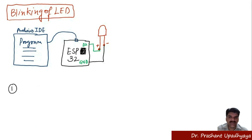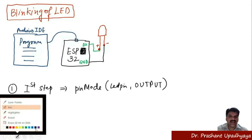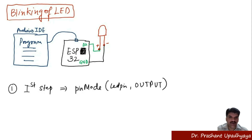The first step is to define the pin mode. We have to decide where we are connecting our LED, so we define the LED pin as pin number D2. We set this LED pin as an output, meaning we define the pin number and set its functionality as output.